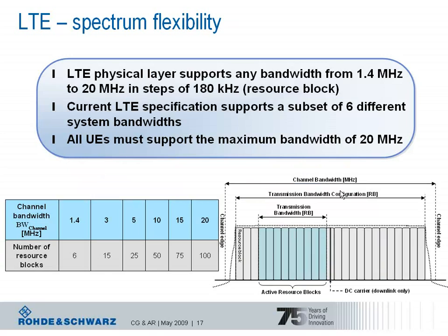Now let's have a closer look at spectrum flexibility in LTE. The physical layer supports any bandwidth from 1.4 MHz to 20 MHz in steps of 180 kHz, which is the resource block definition. The current LTE specifications support a subset of six different system bandwidths for FDD and TDD, as shown in the table — values of 1.4 up to 20 MHz, each corresponding to a certain number of resource blocks.